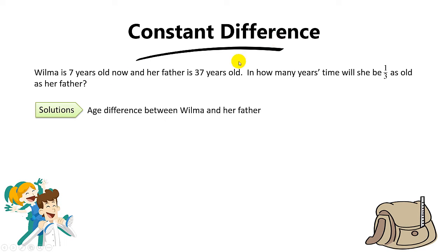Since we know the difference is the same, let's find the age difference between Wilma and her father. We take 37 minus 7. You get a difference of 30 years.